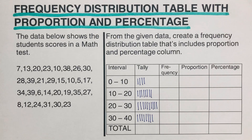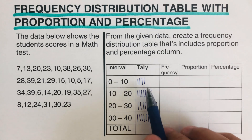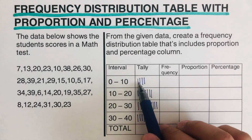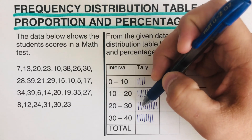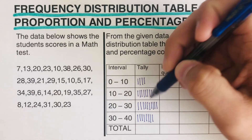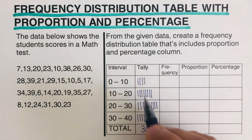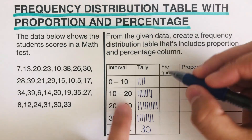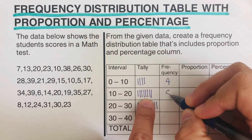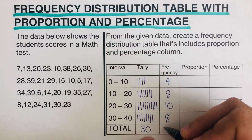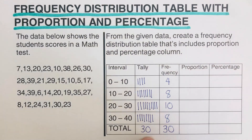Now we count all the tallies. The total is 30. Breaking it down by interval: the first is 4, the next is 8, then 10, then 8. The total for all intervals comes to 30. Now let's move on to filling in the proportion column.